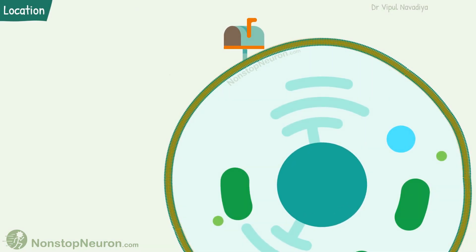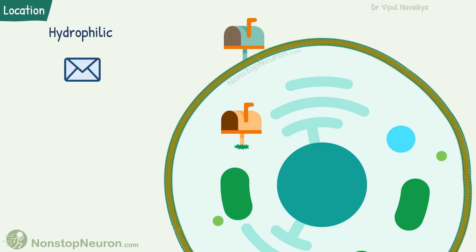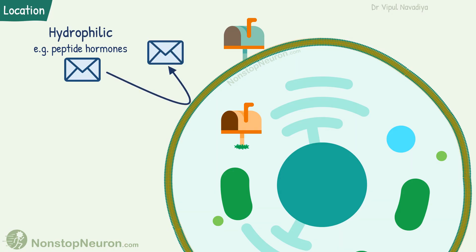Although receptors are often shown on the cell membrane, that's not the only place where they are found — they are also found inside the cell. Membrane receptors are for hydrophilic messengers, for example peptide hormones. Such molecules are too big and, being hydrophilic, they cannot cross the hydrophobic lipid bilayer. So receptors for such messengers are expressed on the cell surface.